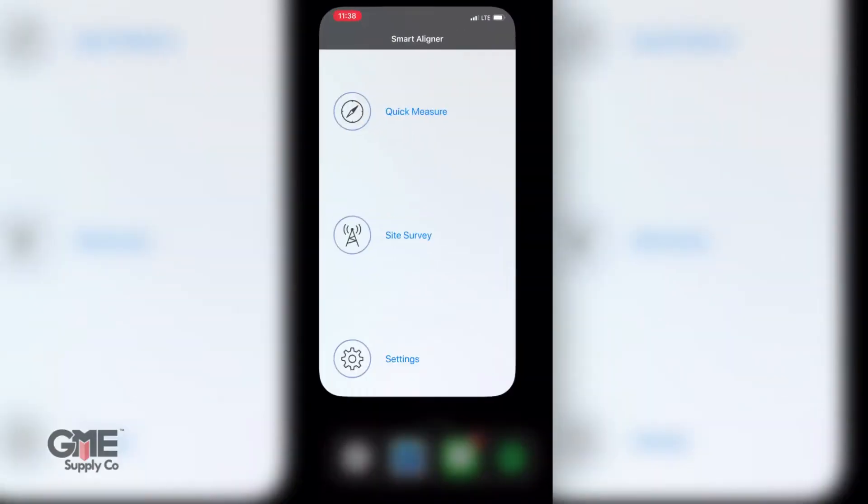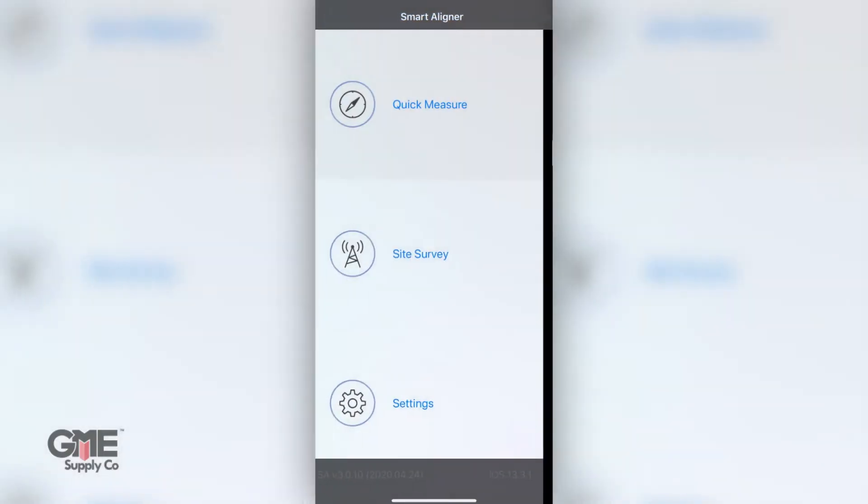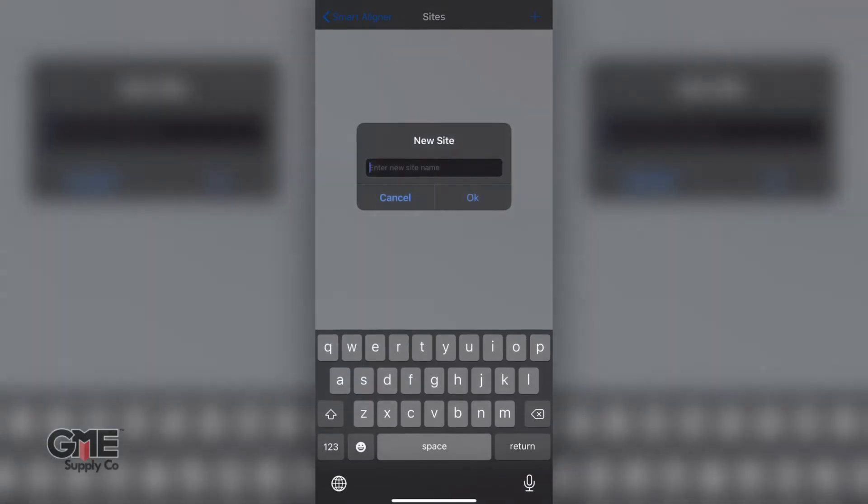That being said, the Smart Aligner can be optimized by using MultiWave's free iOS and Android mobile app. Watch the alignment data in real time, save and send PDF reports directly from your mobile device, and even include up to 10 photos in those reports.